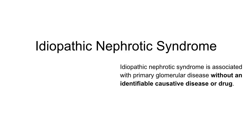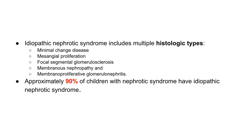Idiopathic nephrotic syndrome is a primary glomerular disease without an identifiable causative disease or drug. Approximately 90% of children with nephrotic syndrome have idiopathic nephrotic syndrome. Based on pathological changes, it is classified into minimal change disease, mesangial proliferative nephrotic syndrome, focal segmental glomerulosclerosis, membranous nephropathy, and membranoproliferative glomerulonephritis.